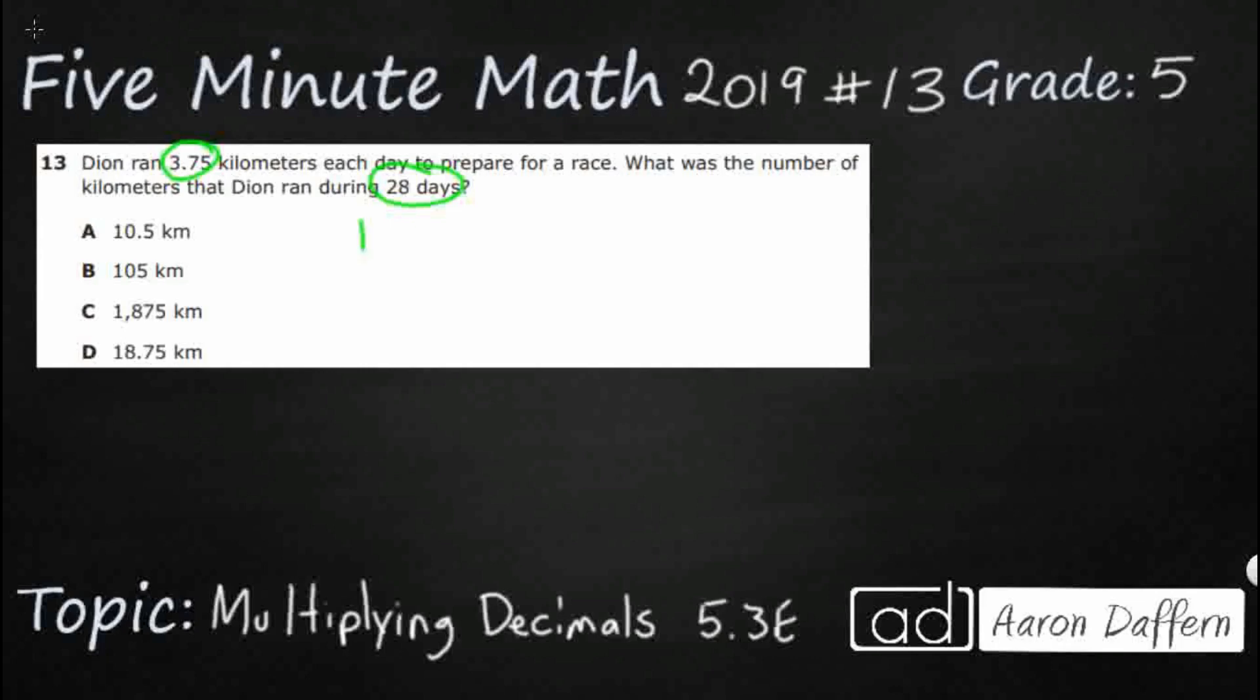So if we're looking at it as kind of like a strip diagram, right, we've got our total here, unknown, and we've got 3.75, 3 and 75 hundredths, and we've got another 3 and 75 hundredths, all the way to where you do 28 times.